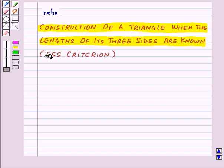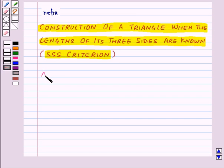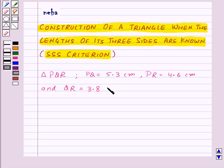This is the SSS criterion. Let us construct a triangle PQR in which PQ is equal to 5.3 cm, PR is equal to 4.6 cm, and QR is equal to 3.8 cm.